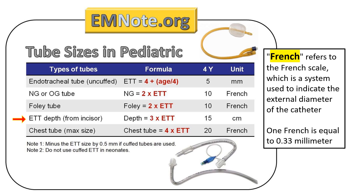Endotracheal Tube Depth Estimation: The depth at which an endotracheal tube should be inserted in pediatric patients is calculated by multiplying the endotracheal tube size by 3. The depth is measured in centimeters at the level of the central incisors.